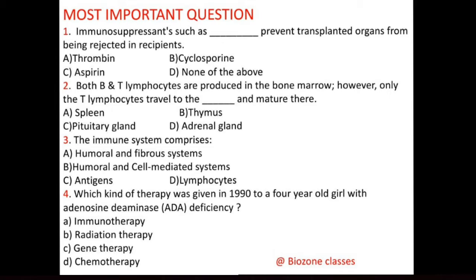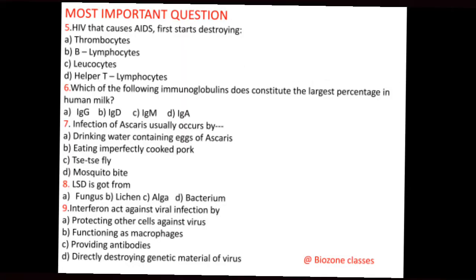Question number 5: HIV, which causes AIDS, first starts destroying — A. Thrombocytes, B. Lymphocytes, C. Leukocytes, D. Helper T lymphocytes. The correct answer for question number 5 is helper T lymphocytes.